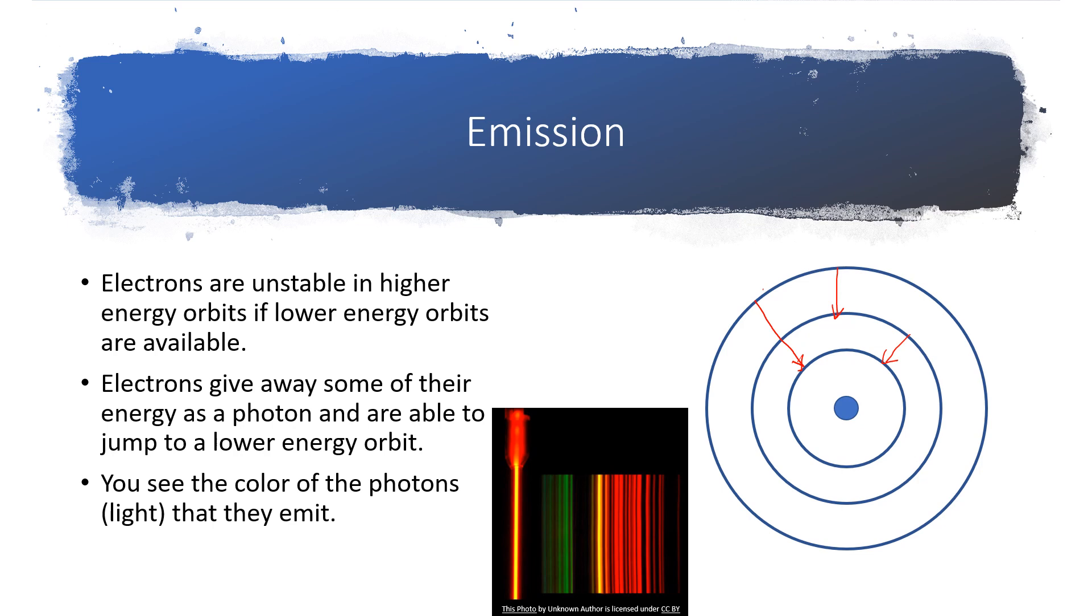And since the atom is giving away that energy, it's emitting that light, we would see the presence of certain colors. And that's what we're seeing, for instance, in this photograph that shows the neon spectrum.